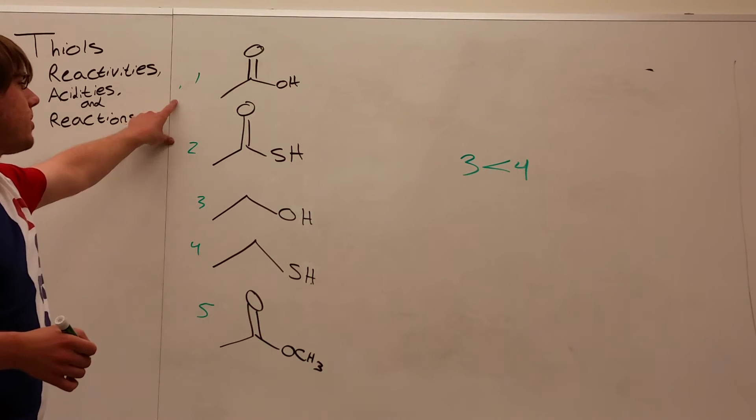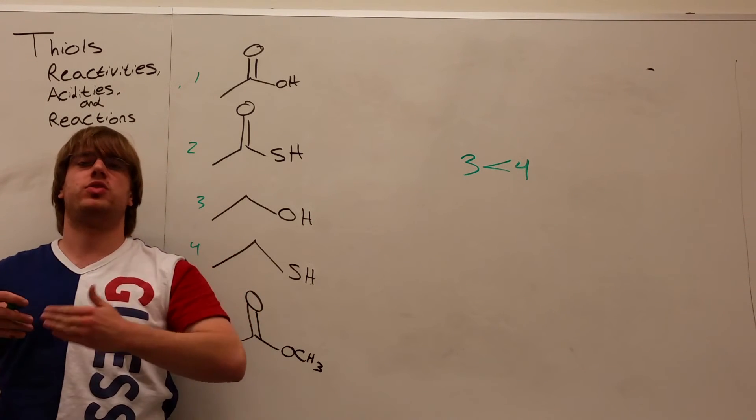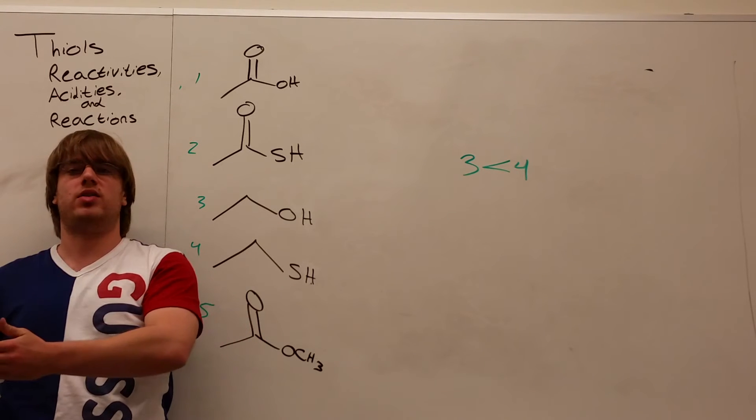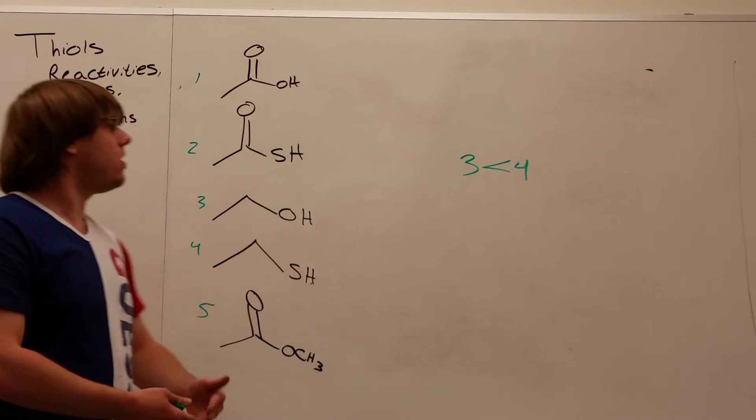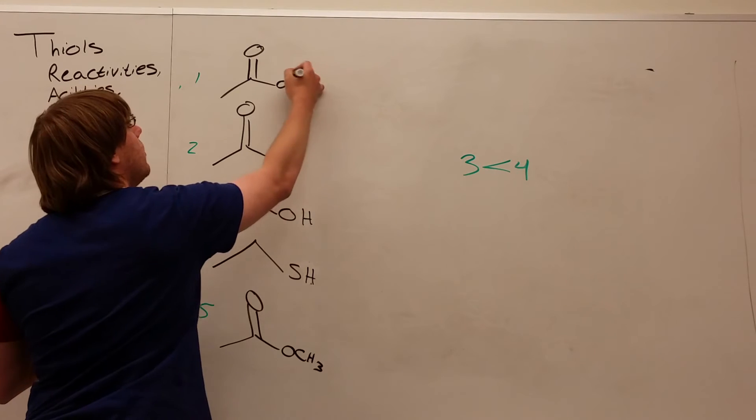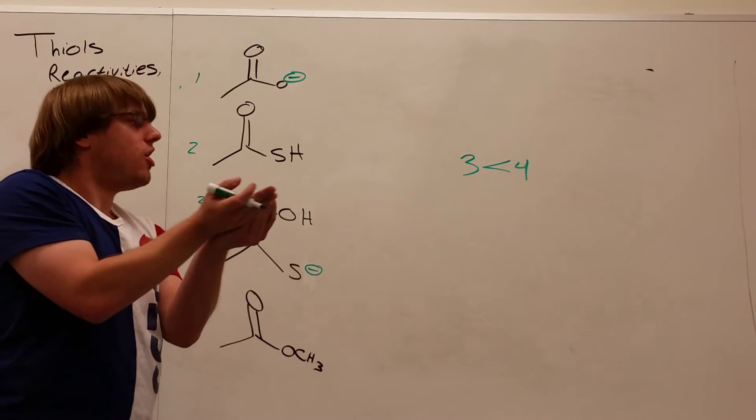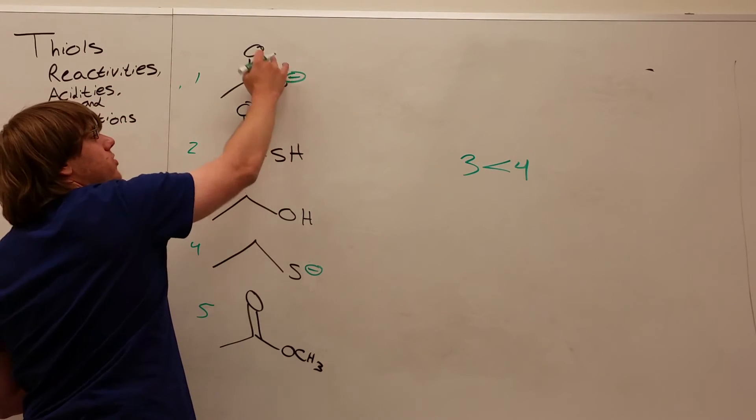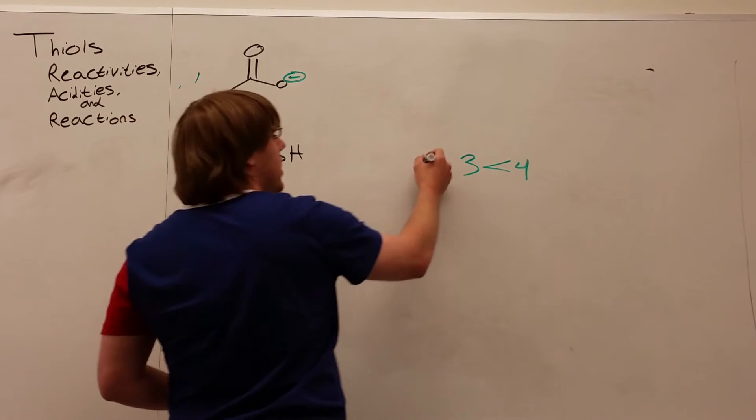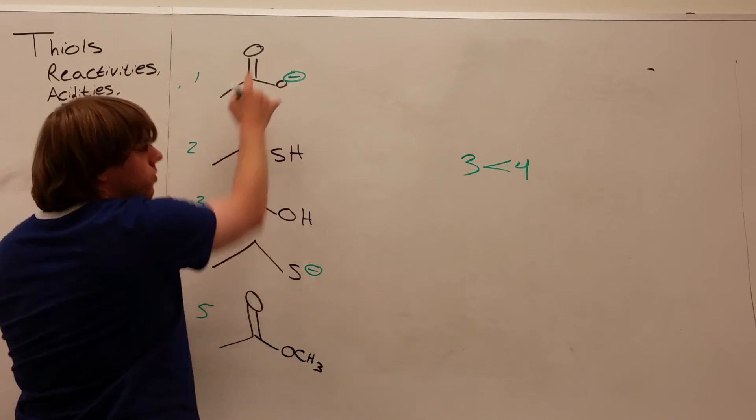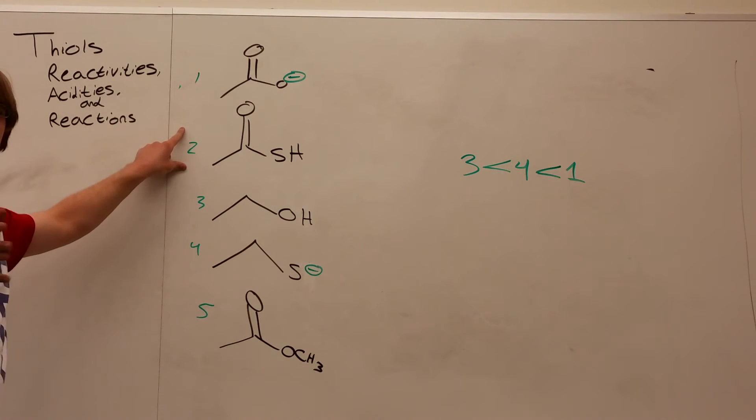But now, how do we toss in these carboxylic acid-looking things? Well, we saw before when we looked at the stability of our leaving groups that even though S- is more stable than O-, S- isn't as stable as O- when that O- has resonance. So if I compare the O- I get here to the S- I get here, yes, S is larger. It can move those electrons around a little more within its orbital, but that's not nearly as good as being able to move those electrons around two separate atoms. So that carboxylate is going to be more stable as a result. And so you'd have structure 1 being more acidic than the thioacid.